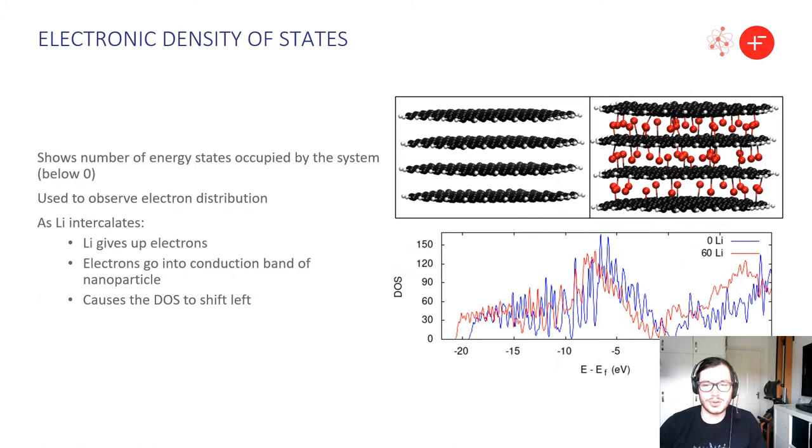Another method we can use to observe this charge transfer occurring between the lithium and the carbon nanoparticle itself is the electronic density of states. What the electronic density of states show is the number of energy states occupied by the system below the Fermi level or in this case in our system here in the picture here we've got it set to zero. Now if it is the case that the lithium gives up electrons into the nanoparticle itself then we would expect those electrons to go into the conduction band of the nanoparticle and cause a shift left in the density of states.